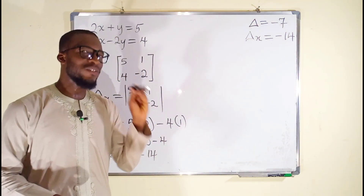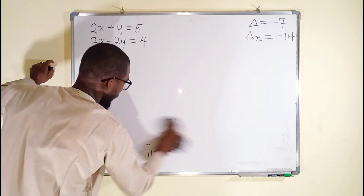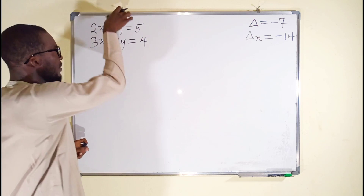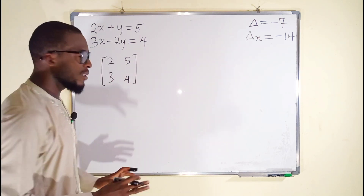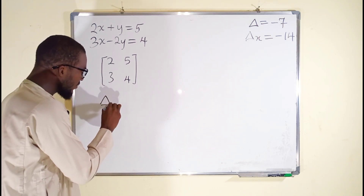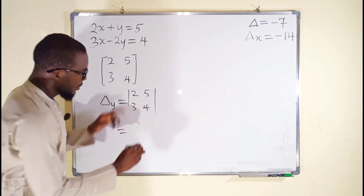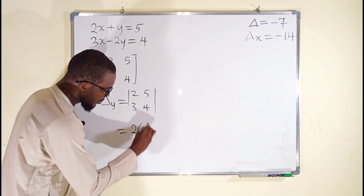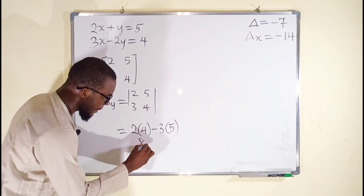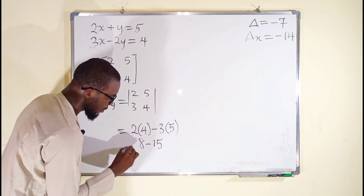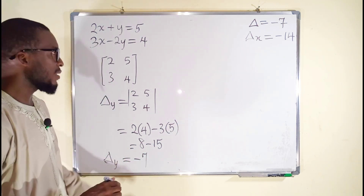Now let us find the determinant with respect to y. In this case, we leave the x column constant and replace the y column with the constant terms 5 and 4. The matrix form gives us the determinant with respect to y as: 2, 3, 5, 4. So 2 multiplied by 4 minus 3 multiplied by 5. Simplifying: 2 times 4 is 8, minus 3 times 5 is 15. The determinant with respect to y is equal to negative 7, because 8 minus 15 is negative 7.